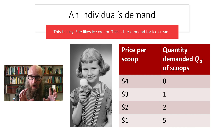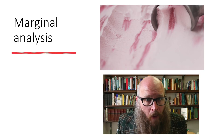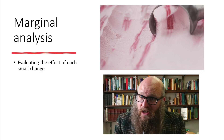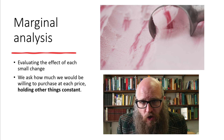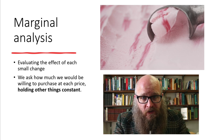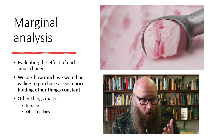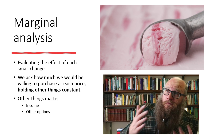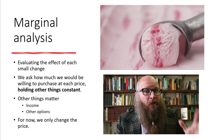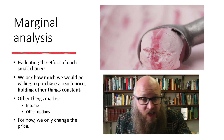We could take each one of these price and quantity pairs and put them on a graph. At each marginal scoop, she assesses the particular benefit it brings — she is thinking on the margin, evaluating the effect of each small change. We ask how much you would be willing to purchase at each price, holding everything else constant. Other things matter: if you have more or less income, you could afford more or less ice cream, or if there are other desserts available, or if you're full from the pizza you already ate. But for now, we're going to just focus on changing the price.